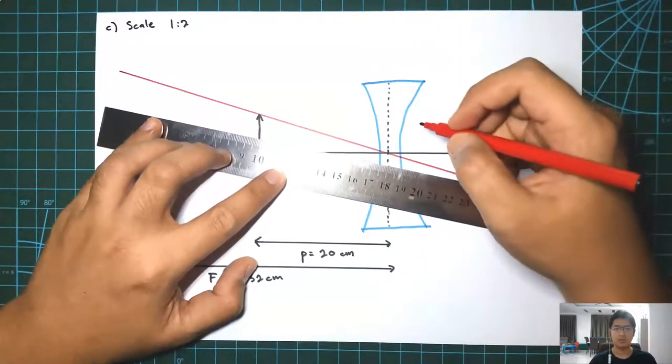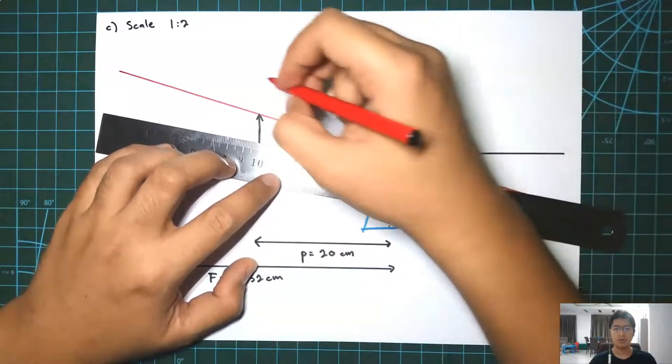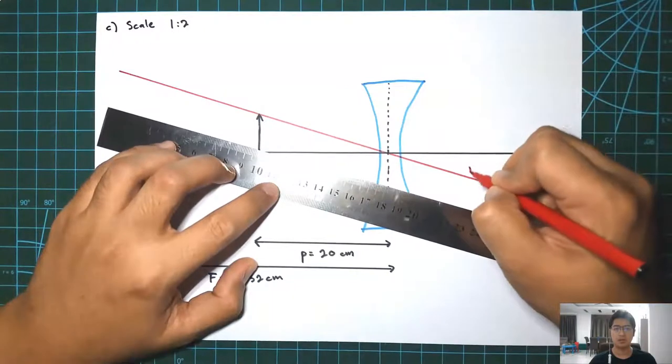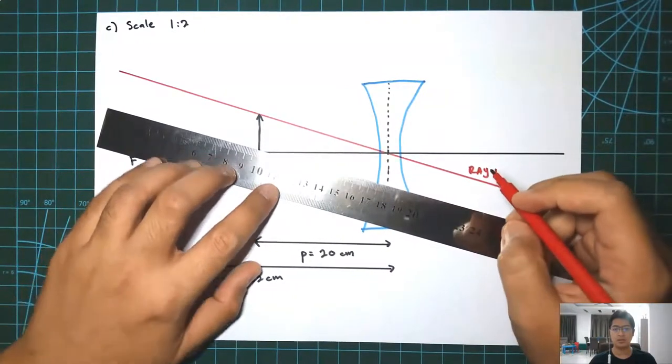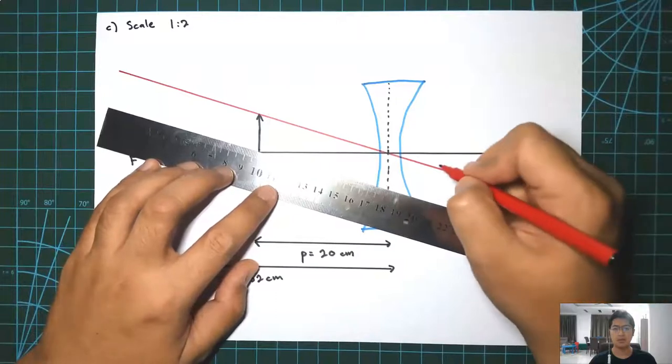This is the first ray, from the head of the object straight to the middle of the lens. This is the easiest ray that you can draw.